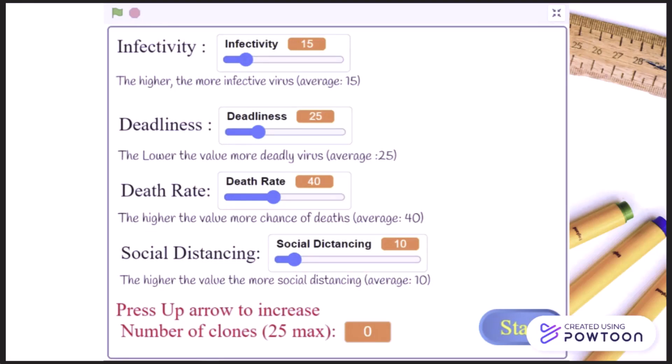This is the page behind the custom button. Here you have full control of the simulation. Infectivity is the chance of the person getting infected by the virus. Deadliness is the strength of the germ on the human body. Death rate is the number of people who can die.